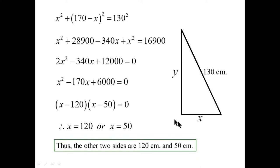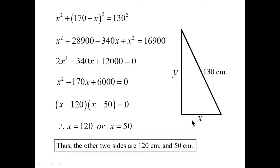If x is 120, then y would be what's left over — that's 50. And if x is 50, y would be what's left over — that's 120. Because remember, they all have to add up to 300. And since those are the same two triangles — if x is 120 and y is 50, it's the same as if x is 50 and y is 120. It's the same triangle just turned on its side.